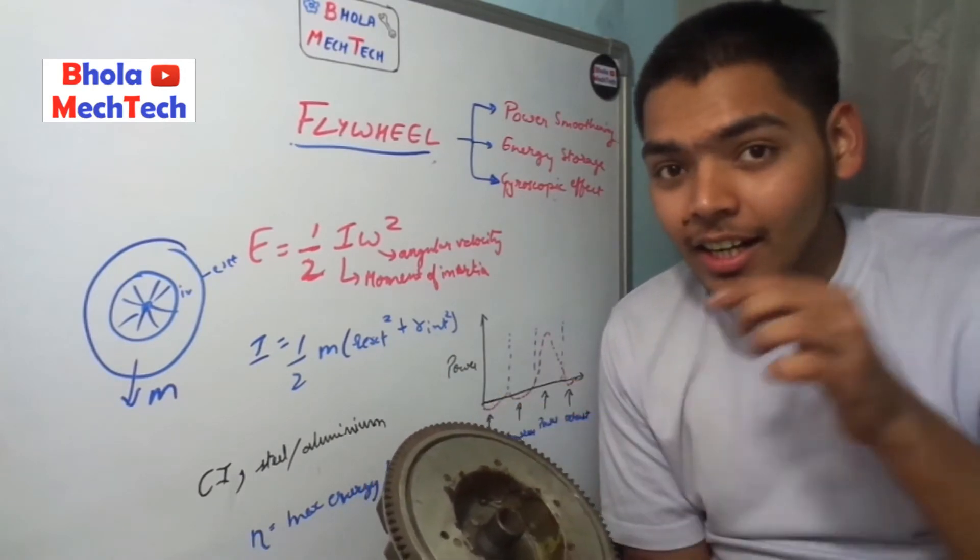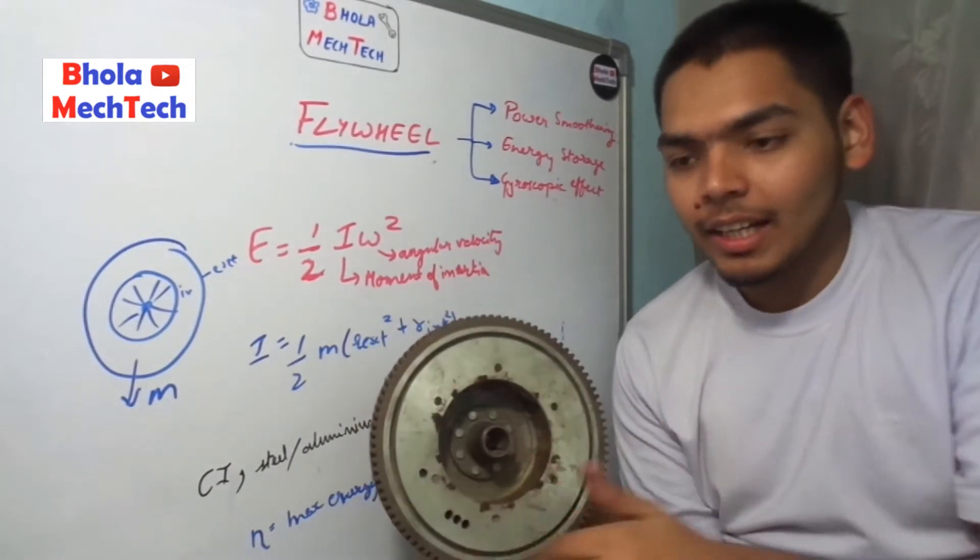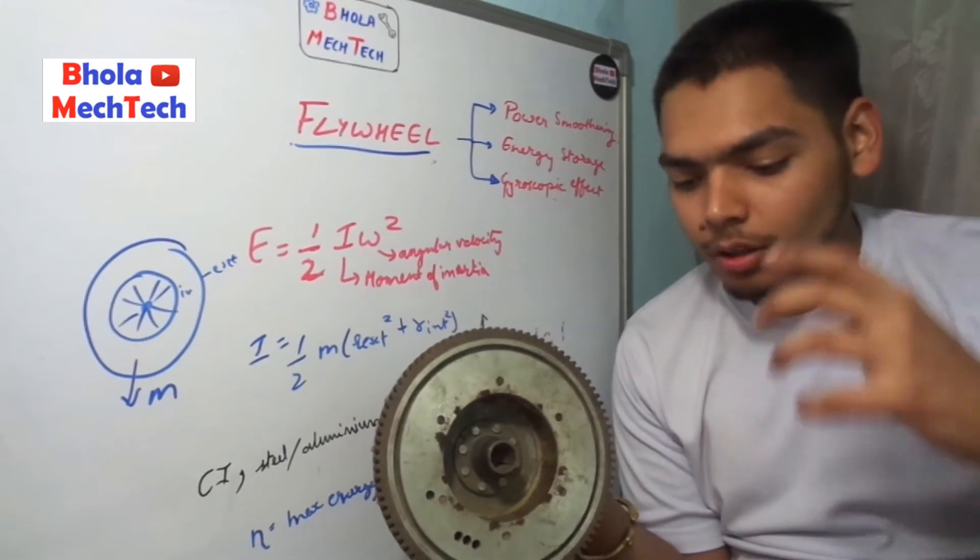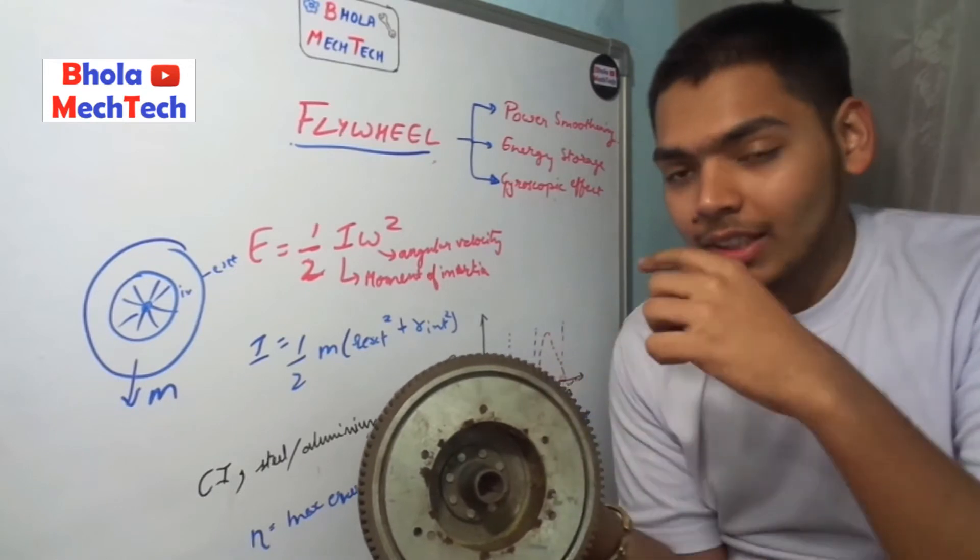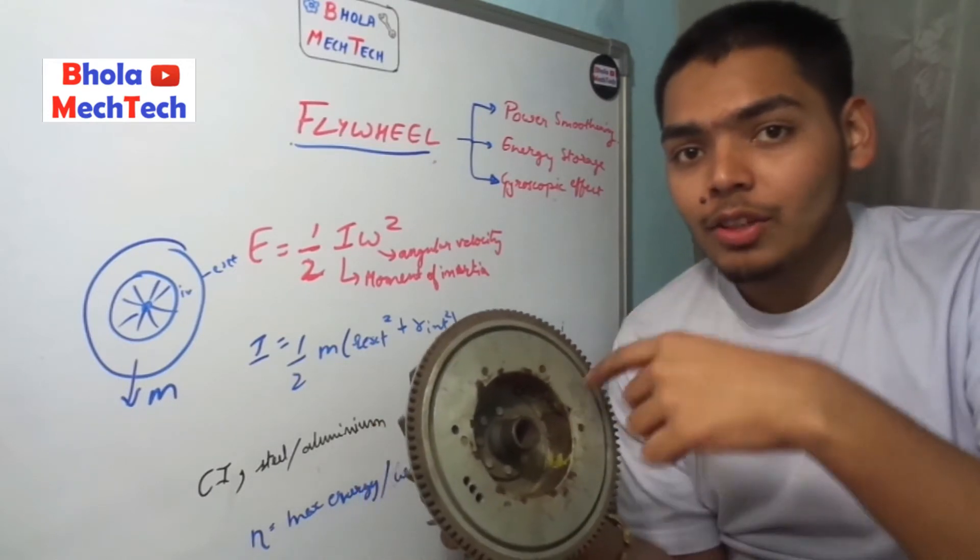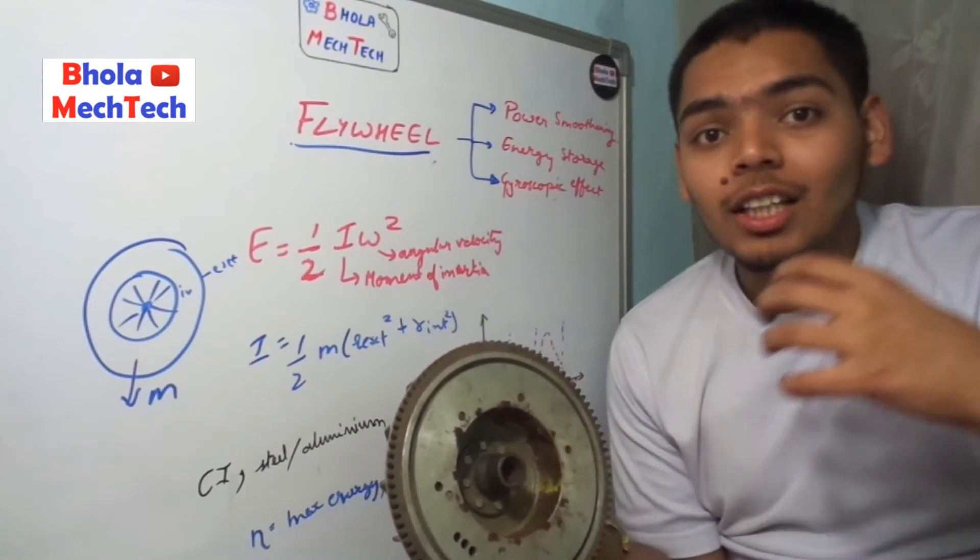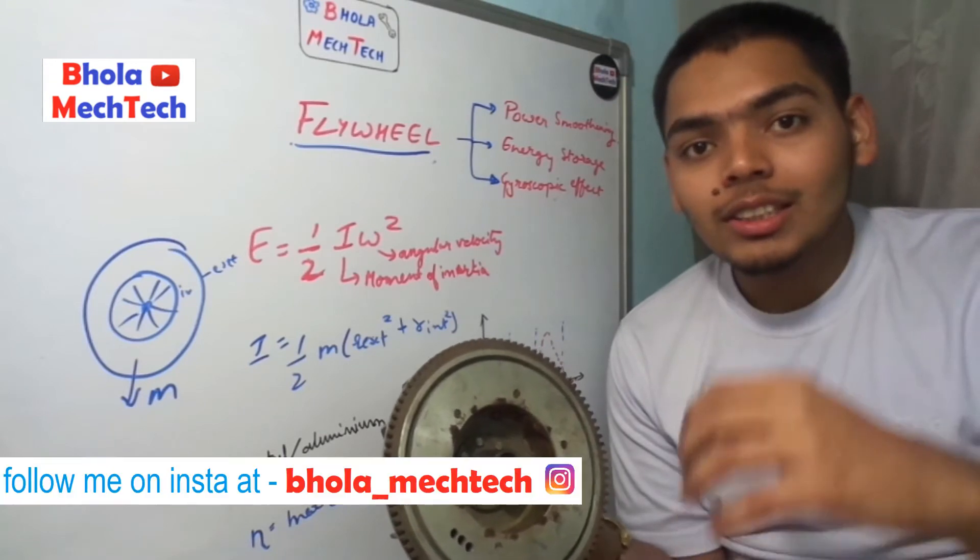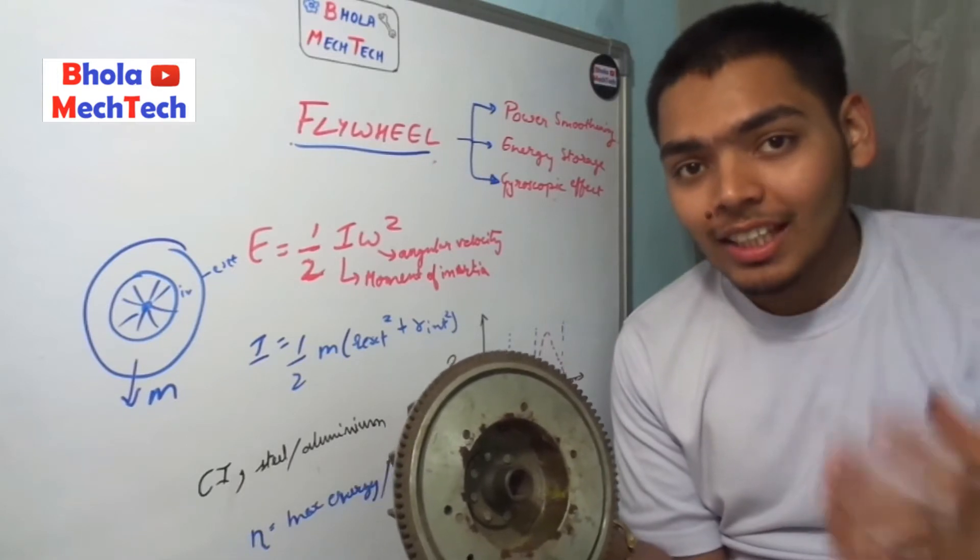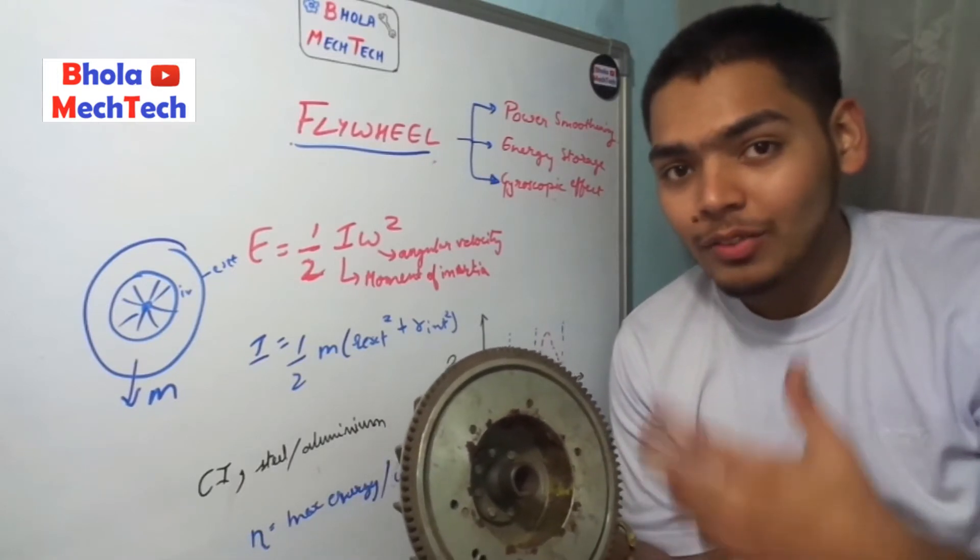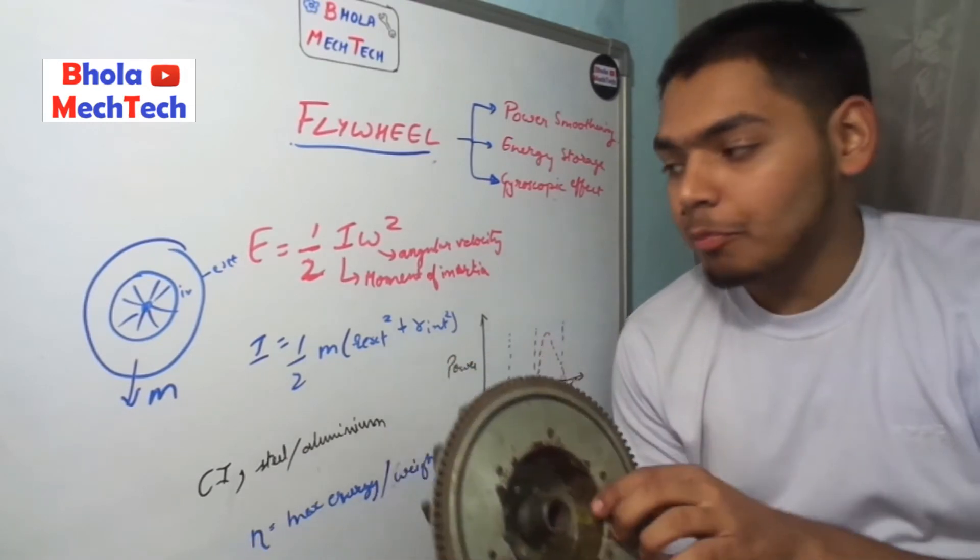One more use is that it is used for starting the engine because it is directly connected to the crankshaft. The starter motor is connected with these gears you can see right here. In self-start bikes or cars, the starter motor is directly connected to the flywheel. When the starter motor rotates, the flywheel starts rotating, and when the flywheel rotates, the crankshaft connected to this flywheel also starts rotating, hence eliminating the use of the kick. This is how it is used for self-starting the vehicle.